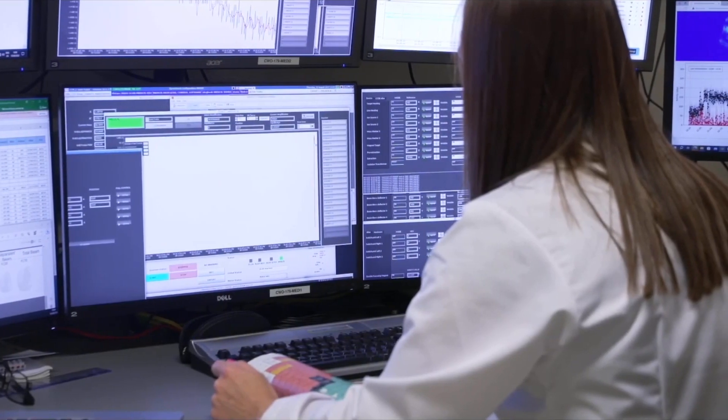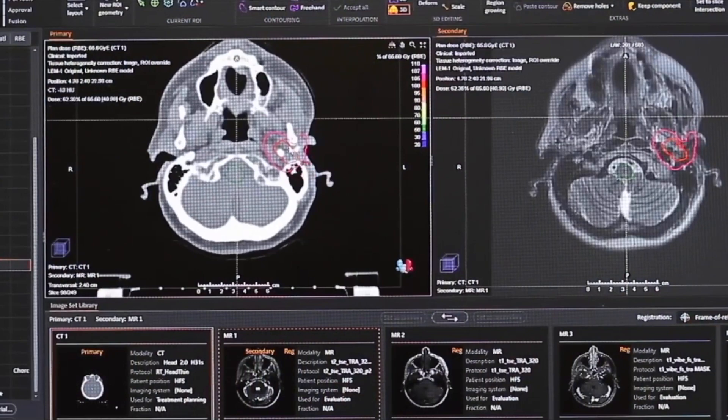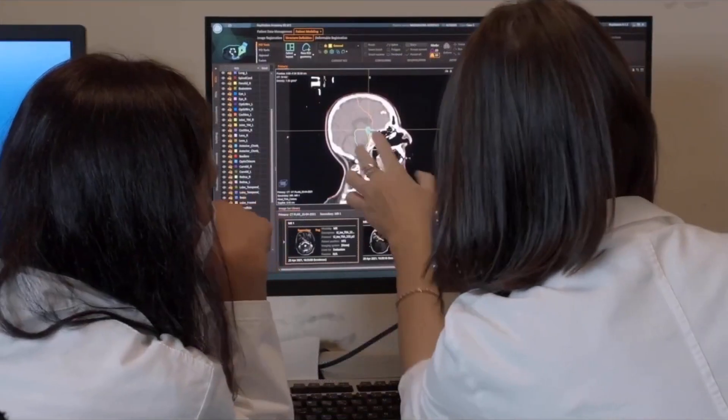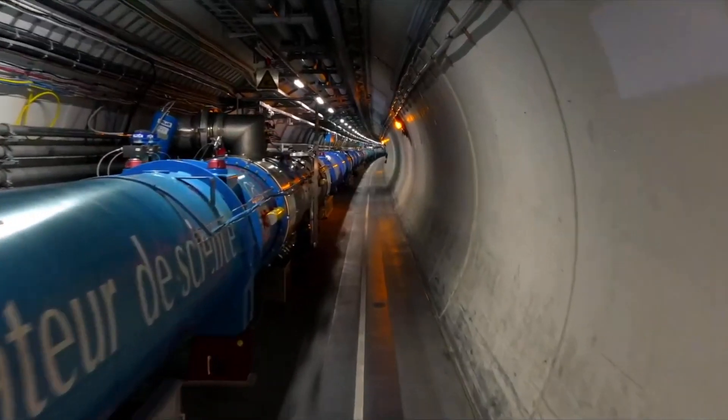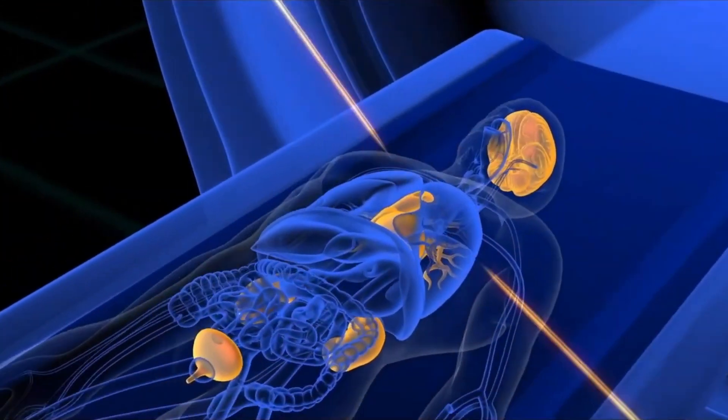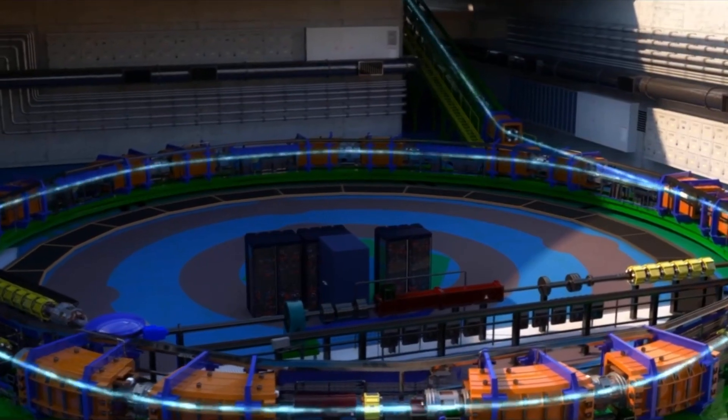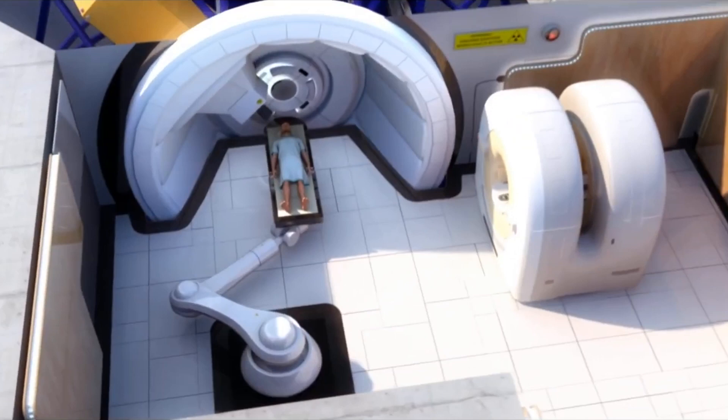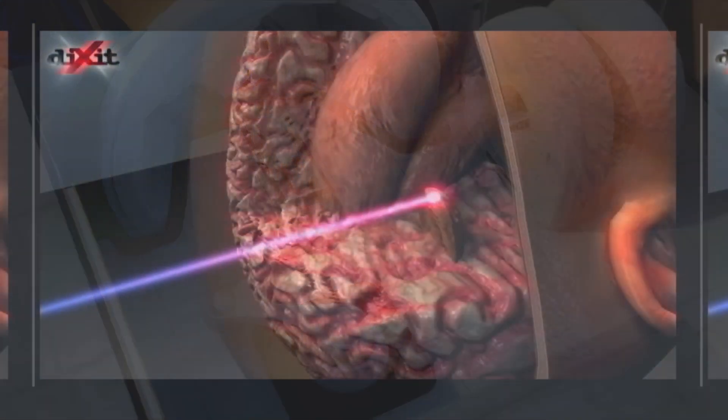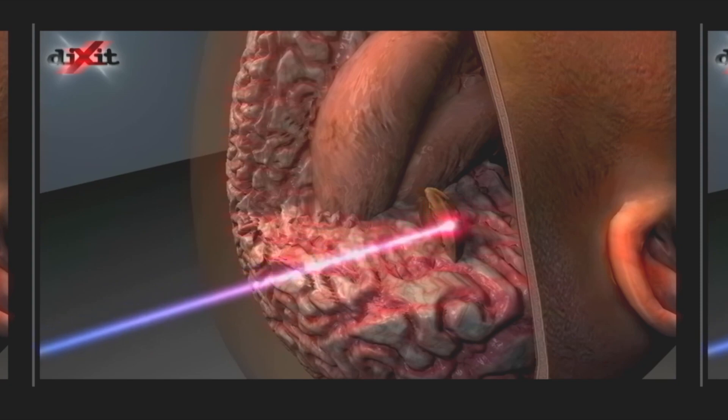Furthermore, CERN's research has contributed to advancements in radiation therapy for cancer treatment. Techniques for precision beam delivery, developed for guiding particle beams in the LHC, have been adapted for use in medical linear accelerators. These accelerators deliver high energy radiation to target cancer cells with exceptional accuracy, minimizing damage to surrounding healthy tissue and improving treatment outcomes for patients.